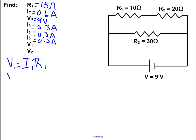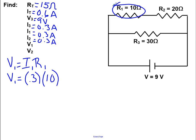So I can say my voltage equals 0.3 amps times 10 ohms — I'm getting my 10 ohms from right up here. So my voltage equals 3 volts.